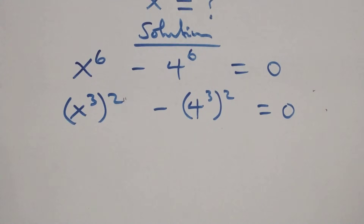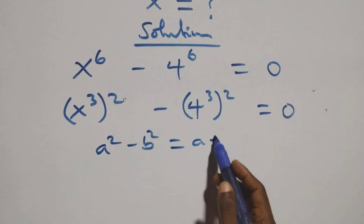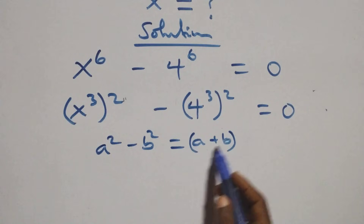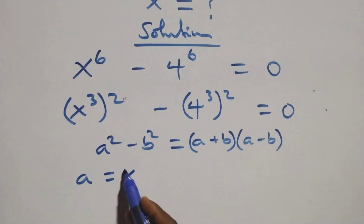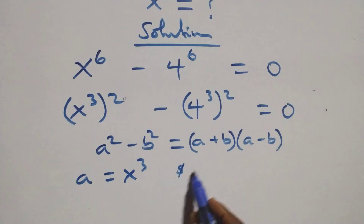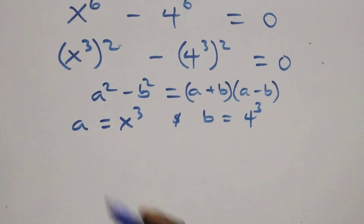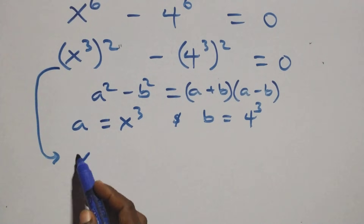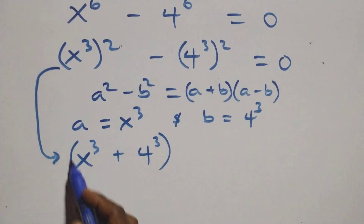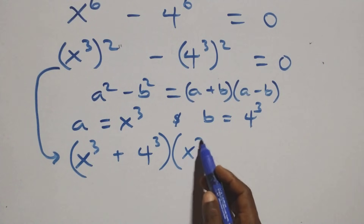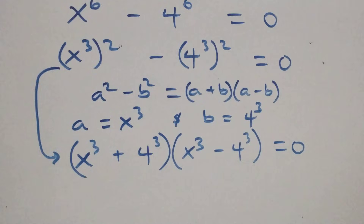The next step: this follows the identity a squared minus b squared, which is the same as (a + b)(a - b). Here, a stands as x raised to power 3 and b stands as 4 raised to power 3. So this becomes (x³ + 4³)(x³ - 4³) equals to 0.